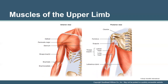When talking about muscles of the upper limb, we're looking at the shoulder, elbow, wrist, and fingers. There's another nice chart on page 189 for the upper limb. As you prepare for your quiz, you need to understand muscle names, what they do, and where they are.